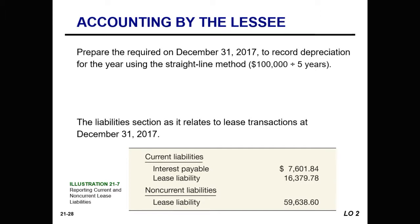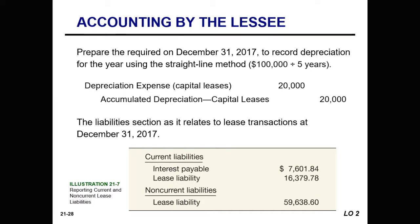We prepare the required December 31, 2017 depreciation entry using the straight-line method — the method they use for similar equipment they own. Straight-line on $100,000 divided by five years gives a depreciation expense of $20,000 and accumulated depreciation of $20,000, both under capital leases. The liabilities section on December 31, 2017 shows interest payable of $7,601.84 and a current lease liability of $16,379.78 (the amount due January 1st), plus non-current lease liabilities of $59,638.60 for the remaining future payments.